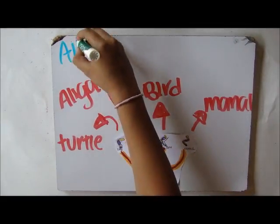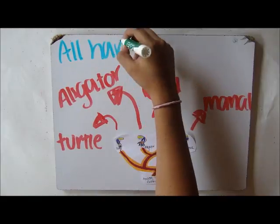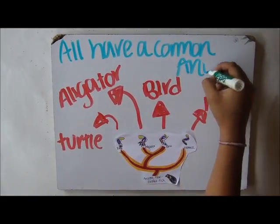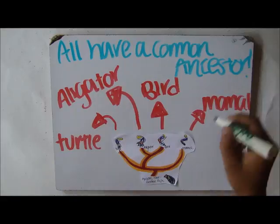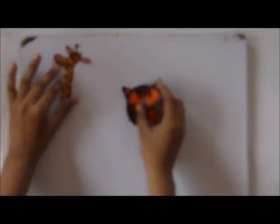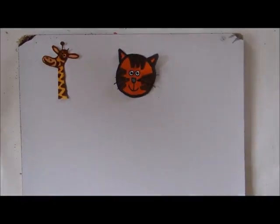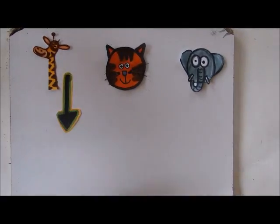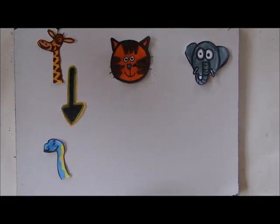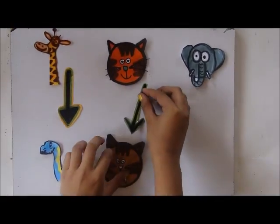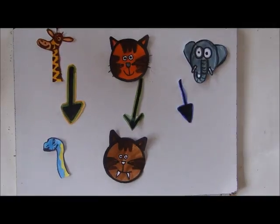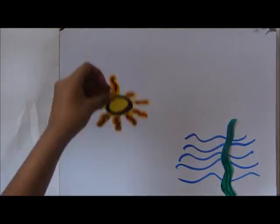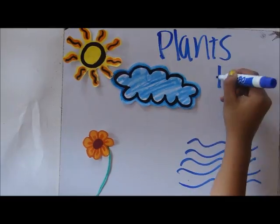The turtle, mammal, alligator, and bird have a homologous body structure with the ancient lobe-finned fish. So we could say that the elephant is related to the mammal, the giraffe with the long-necked dinosaur, and the tiger with the saber-tooth. But not only animals have homologous structures — plants too.